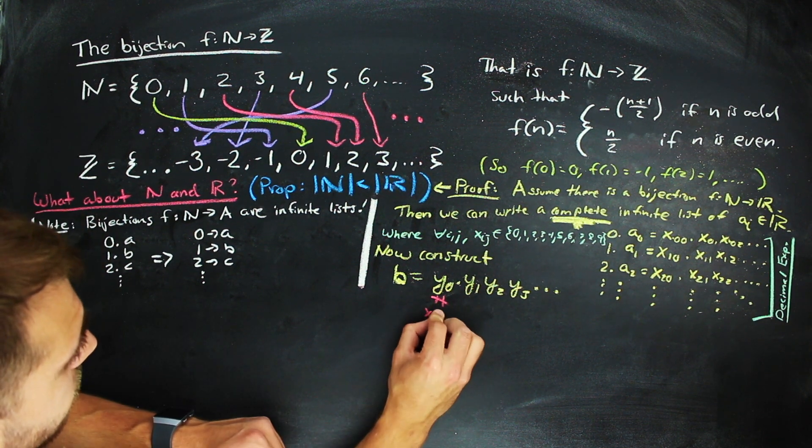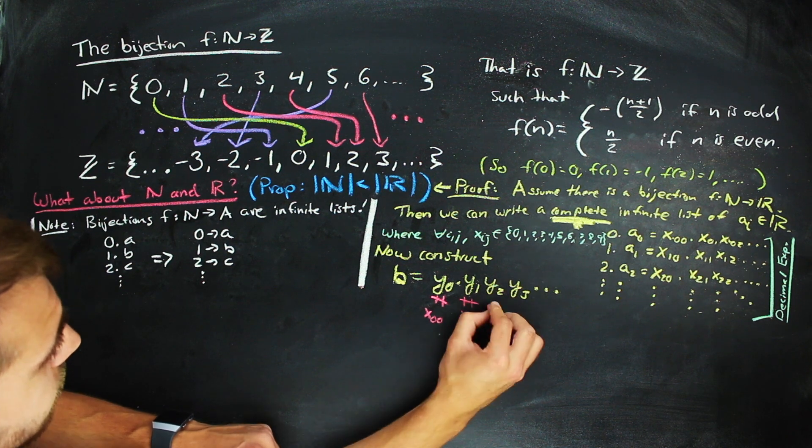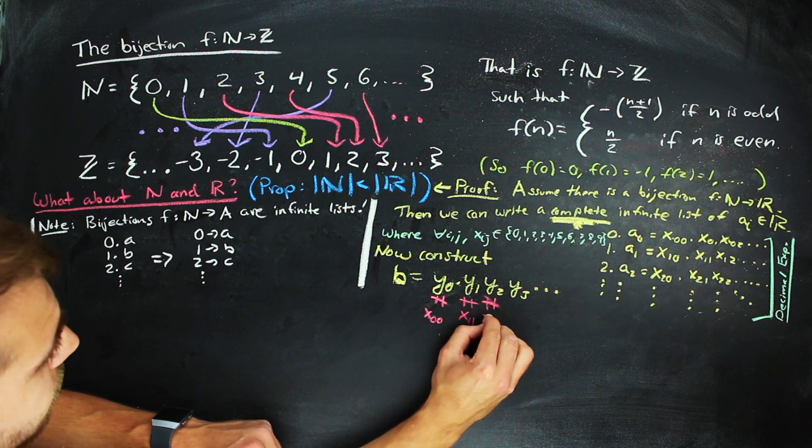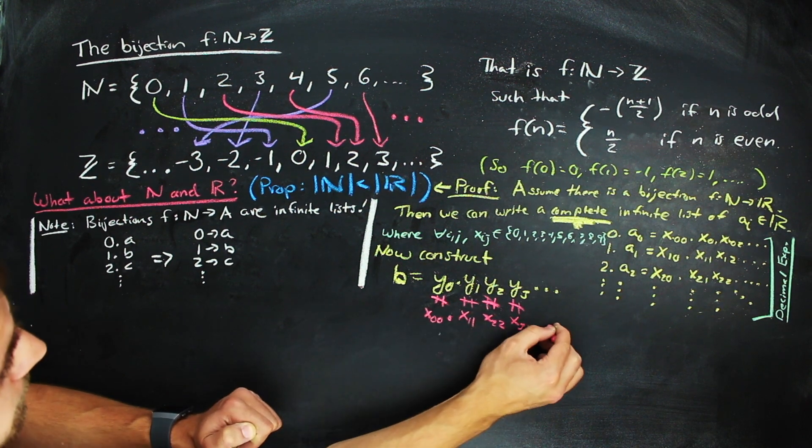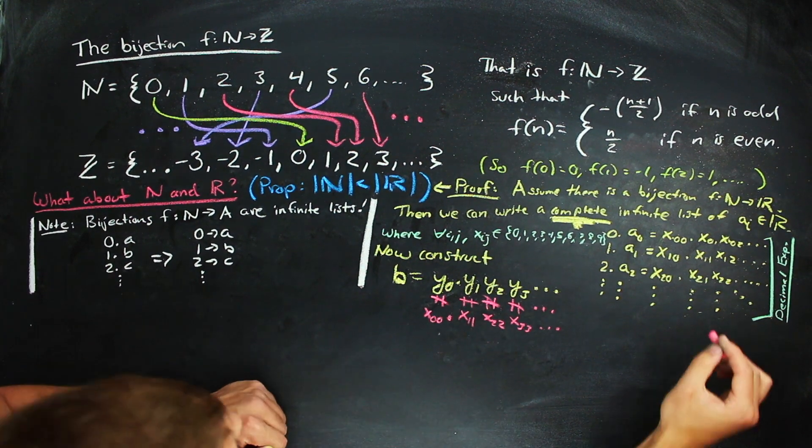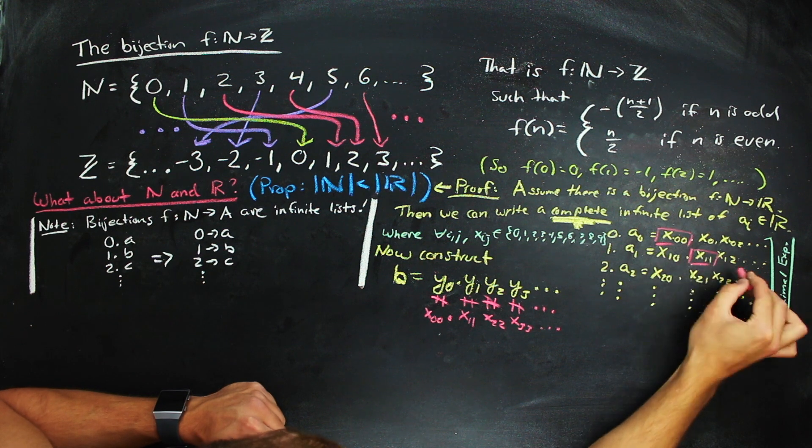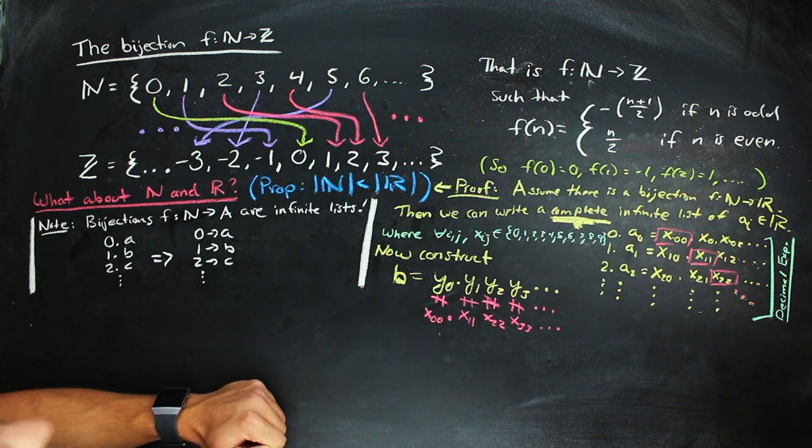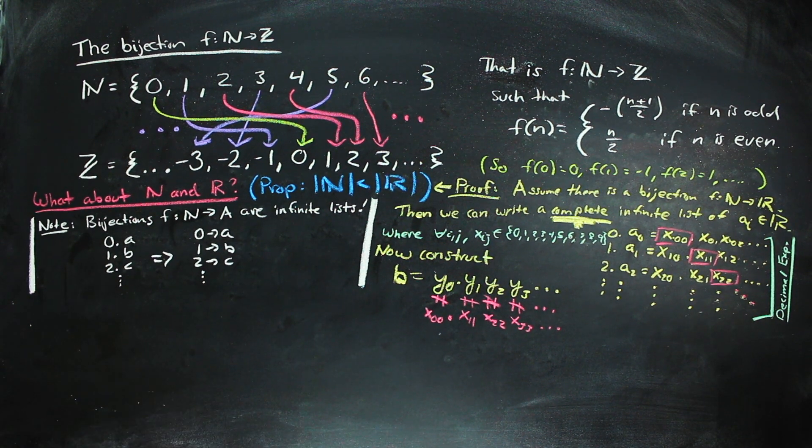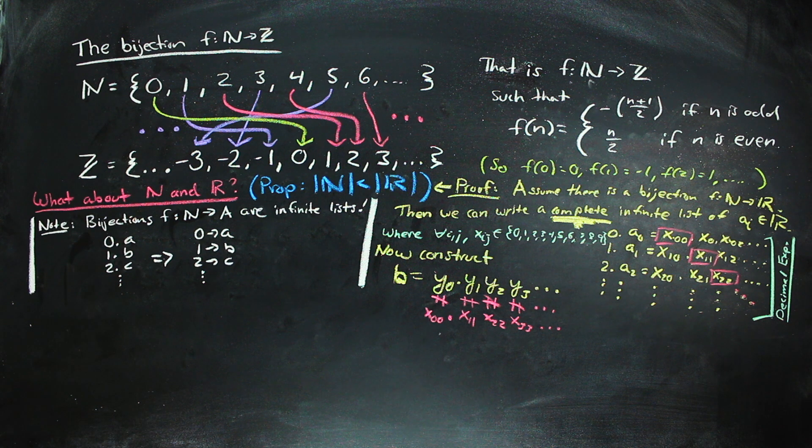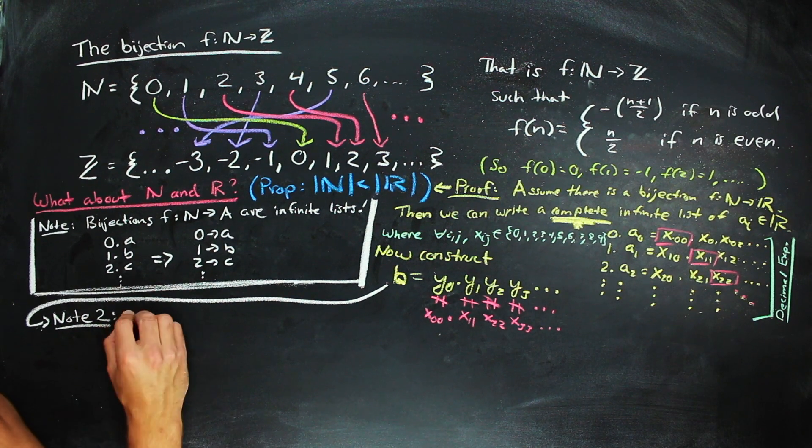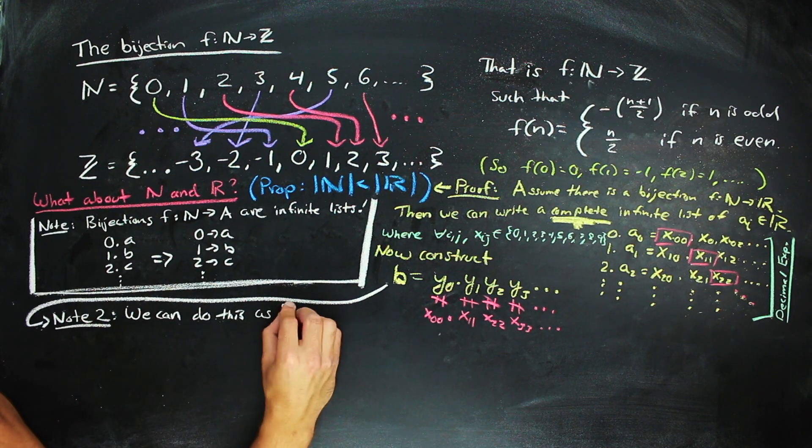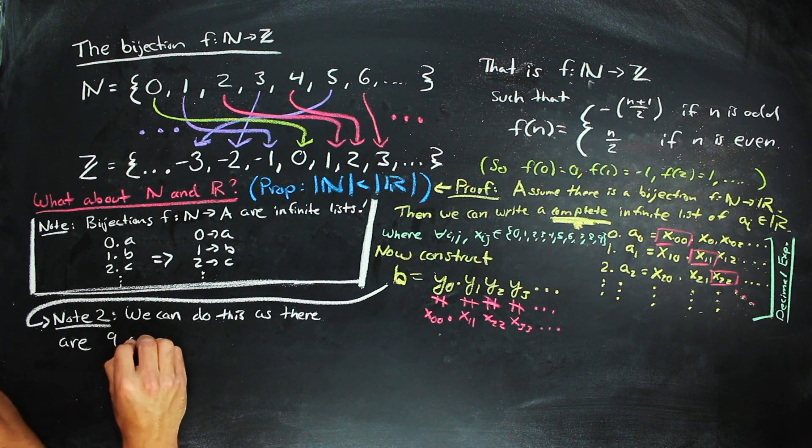The second digit of b is not the second digit of the second number in our list, so the second digit of b is not equal to x sub 11. And we can keep going and doing this for each diagonal thing and making sure that it's not equal to the digit in the decimal expansion of b at that given place. We just have to be careful that we're not going to end with any repeating nines or zeros in our constructed digit, but that's actually okay and we can make sure that happens.